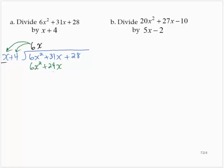Now that we've done the multiplication and multiplied back, we have to subtract that whole thing. Subtracting 6x squared minus 6x squared is 0, so we don't write anything in its place. 31x minus 24x is 7x.